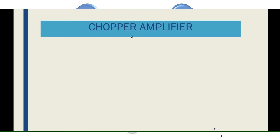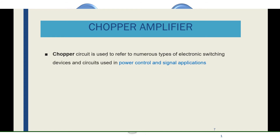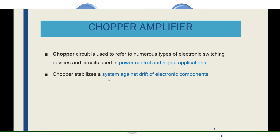Now let us move to the chopper amplifier. Here we are using a circuit called a chopper. The chopper circuit is used for power control and signal applications. It is a type of electronic switching device. The chopper mainly stabilizes the system against drift of electronic components. Sometimes the system may become unstable due to a drift problem, and in that case we can use the chopper device to stabilize the circuit. Using this chopper device, we construct the amplifier.